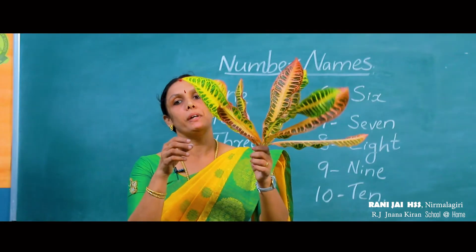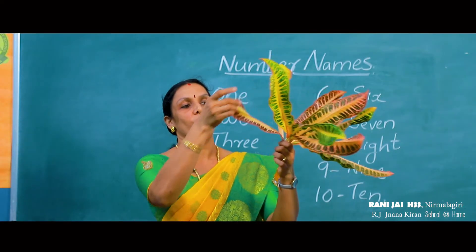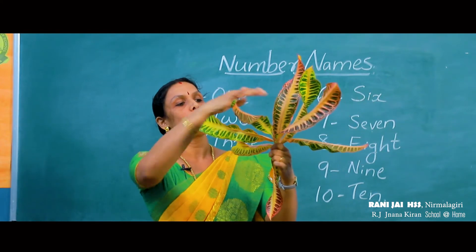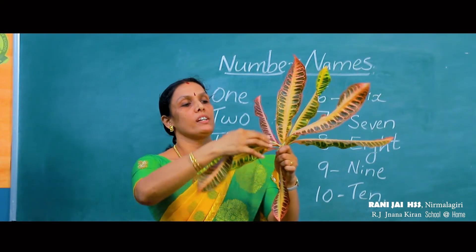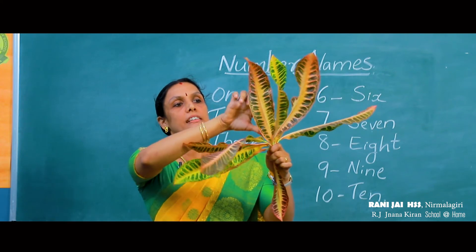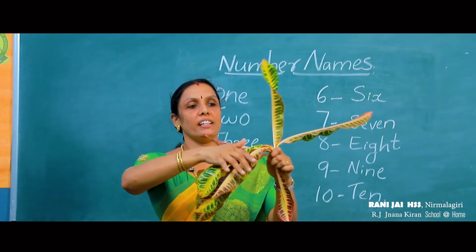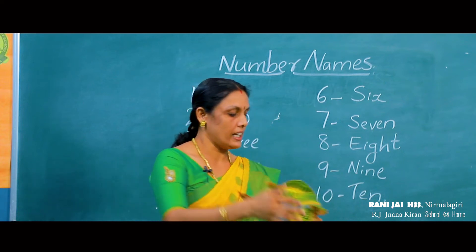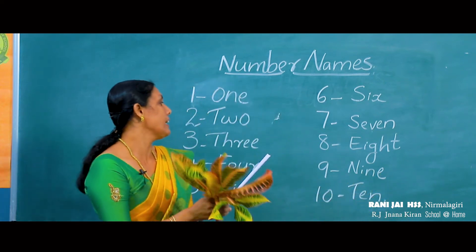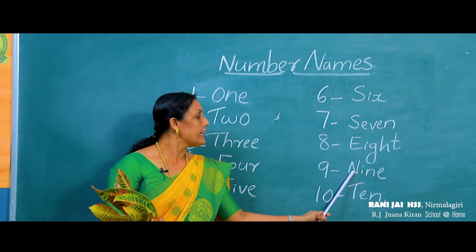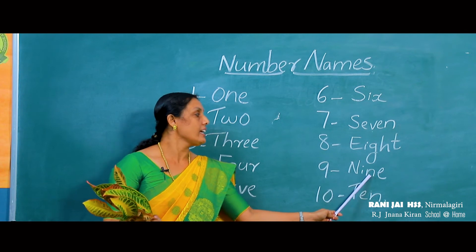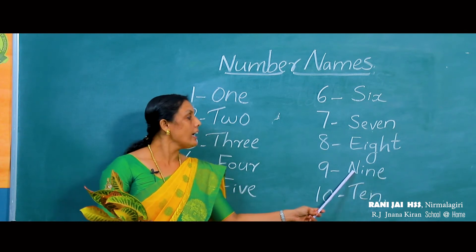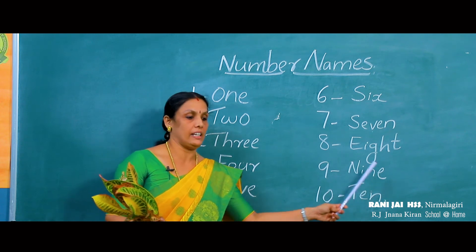How many leaves in my hand? 1, 2, 3, 4, 5, 6, 7, 8, 9. The number name of 9 is N-I-N-E. Spell the number 9 as N-I-N-E.